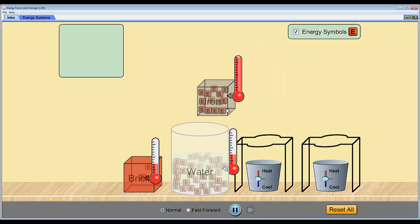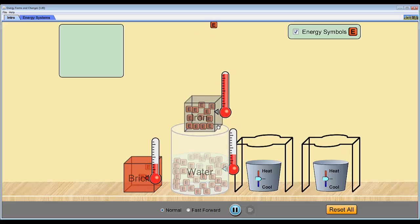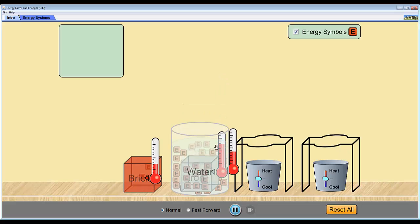And so the first time I do this, we'll just observe what happens to the energy in the iron. So we've got 13 units of energy.